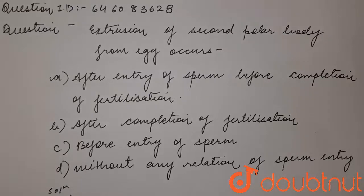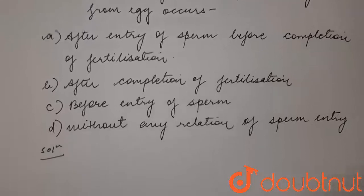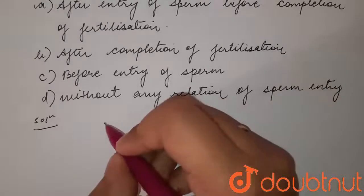The question is: extrusion of second polar body from egg occurs — options are: A) after entry of sperm before completion of fertilization, B) after completion of fertilization, C) before entry of sperm, and D) without any relation to sperm entry.